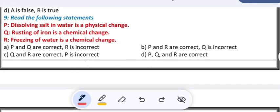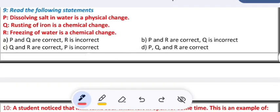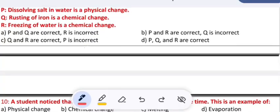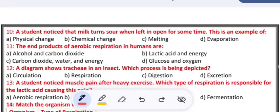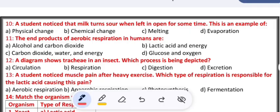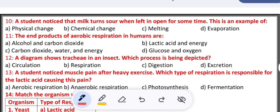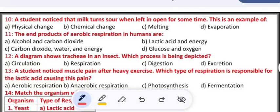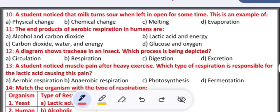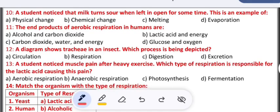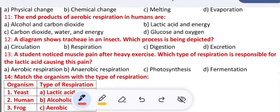Read the following statements: dissolving salt in water is a physical change, rusting of iron is a chemical change, or freezing of water is a chemical change. Four options are given, the correct one you can select. Tenth question: a student noticed that milk turns sour when left in open for some time. This is an example of A) a physical change, B) chemical change, C) melting, D) evaporation.